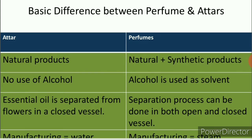Now let us discuss the basic difference between perfume and Athar, which is widely used all over the world. Athar are made from natural products, whereas perfumes are made from natural as well as synthetic products. There is no use of alcohol in Athar, whereas alcohol is used as a solvent in perfumes. Essential oil is separated from flowers in a closed vessel in Athar, whereas in perfumes the separation process can be done in both open and closed vessels.